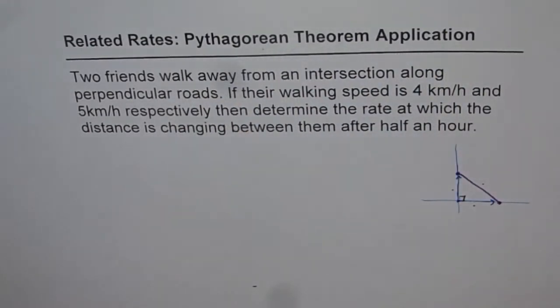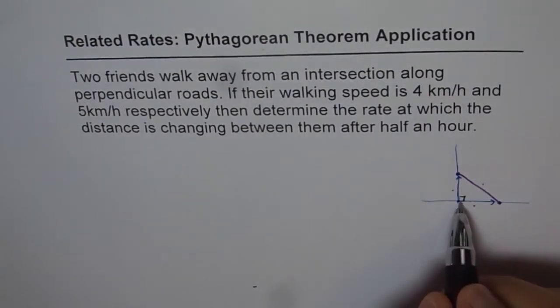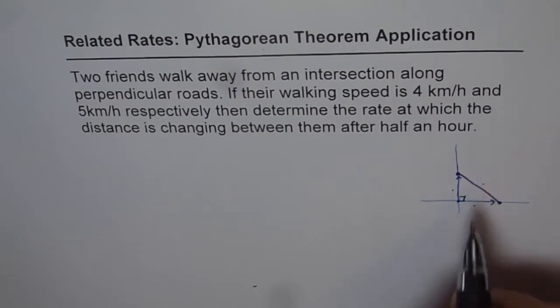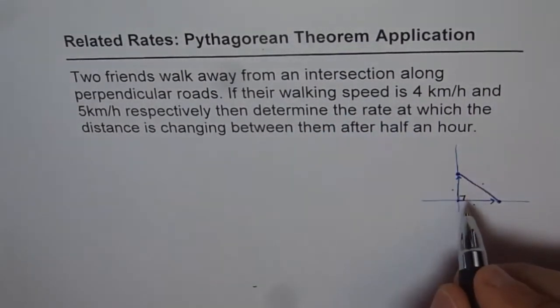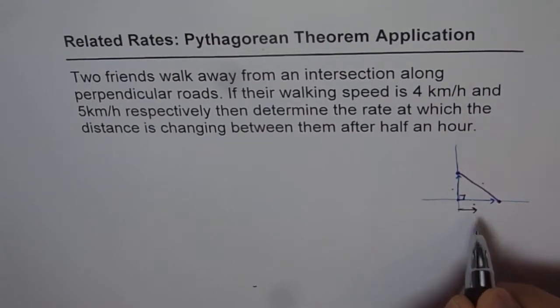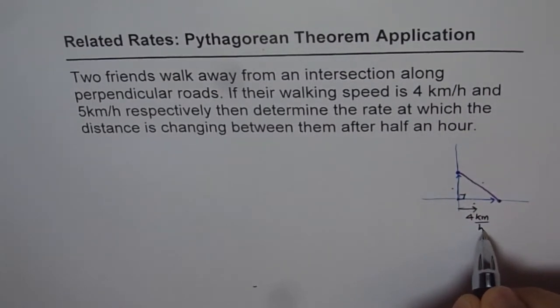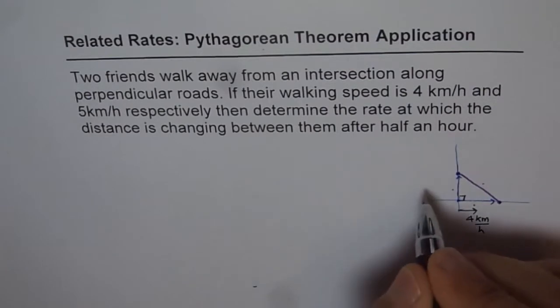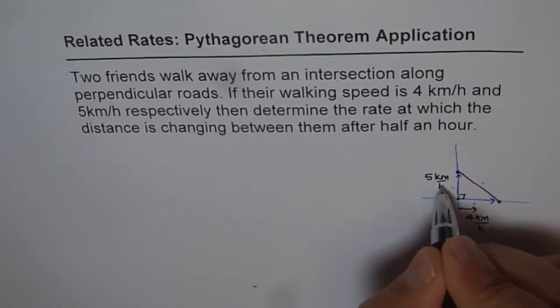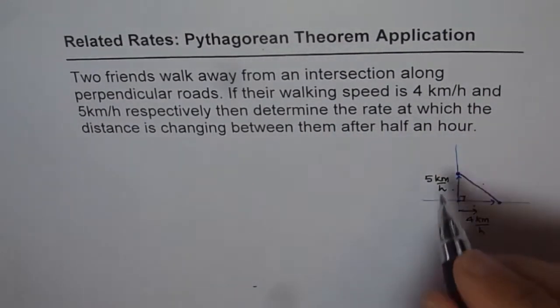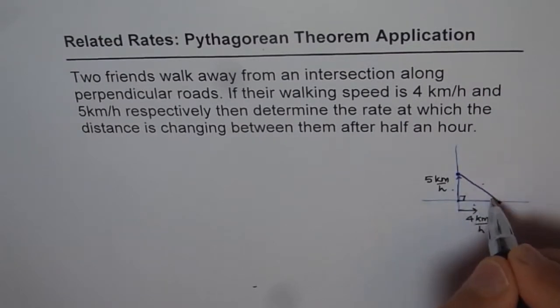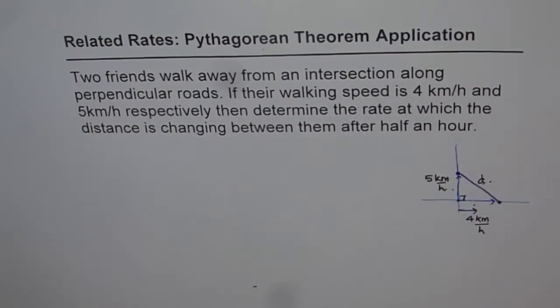Related rates, since it is related to walking speed of two persons. Distance is related with speed of walking. So let's say that they are walking with a speed of 4 km per hour in this direction, and a person walks with a speed of 5 km per hour in this direction. Then we want to determine the rate at which distance is changing between them. This is what we need to find.